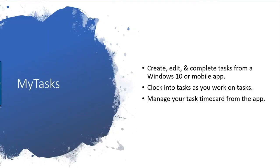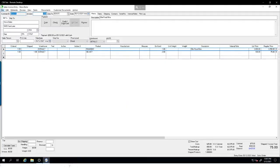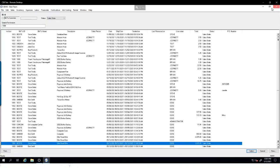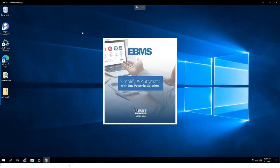My Tasks allows you to create, edit, and complete tasks from Windows 10 or your mobile app. You can clock into tasks as you work on them and manage your task time card straight from the app, both on desktop and mobile. Let's look at EBMS and some settings that are important to think about as you work with My Tasks.